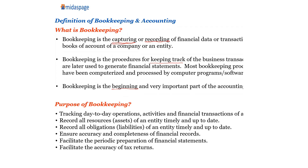Six: facilitate the accuracy of tax returns. If the bookkeeping process is flawed, then it may also affect the returns that the taxpayer will file at the tax office. So, bookkeeping is the beginning and very important part of the accounting process.